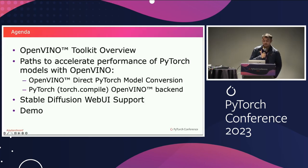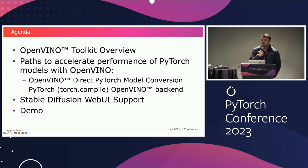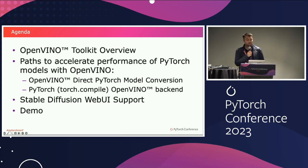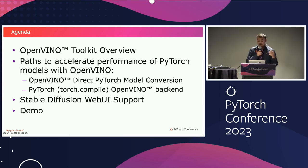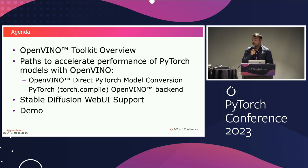In today's session we'll first start off with a brief overview of what OpenVINO Toolkit is, and then we'll talk about the different paths that exist in OpenVINO to accelerate performance of your PyTorch models. The first path is where you can directly bring your PyTorch models to OpenVINO and do the inferencing using OpenVINO APIs. The second path is the newly released OpenVINO backend in torch.compile.